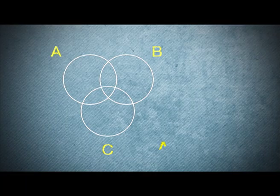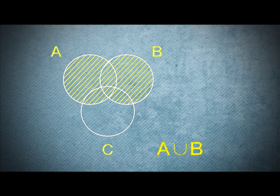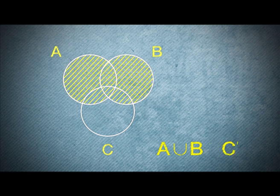For the second diagram, first, we find A union B. And then, we determine C complement. And the answer is the overlapping region.